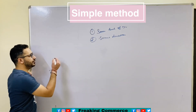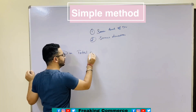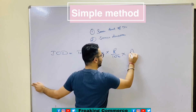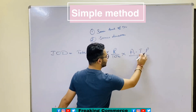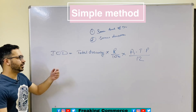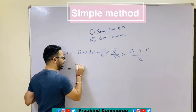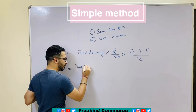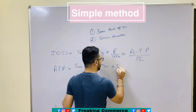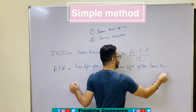To calculate interest on drawing, we have the formula: Total Drawing × Rate/100 × ATP/12, where ATP is the average time period. The average time period is calculated as: ATP = (Time left after first drawing + Time left after last drawing) / 2.